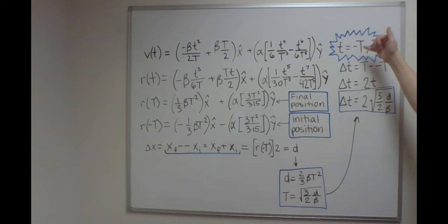So change in t is t final, capital T, minus t initial, which is negative capital T. So change in t is actually just 2T.